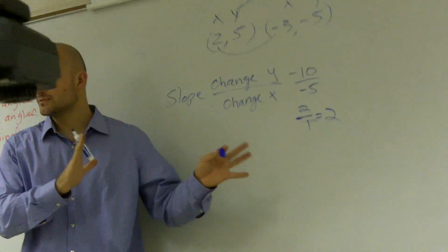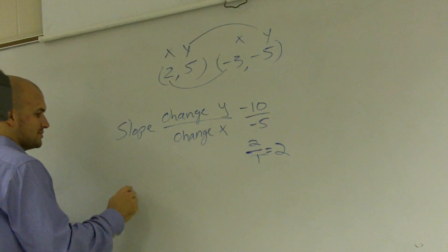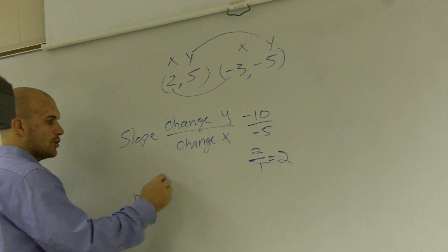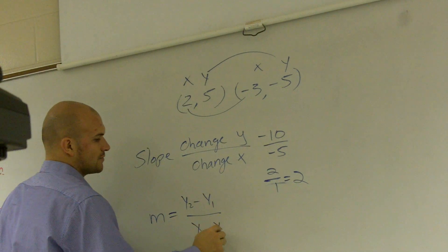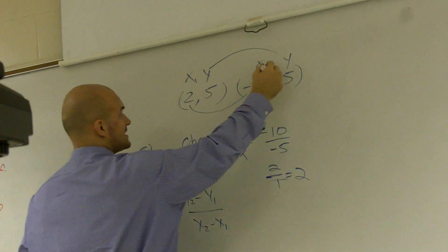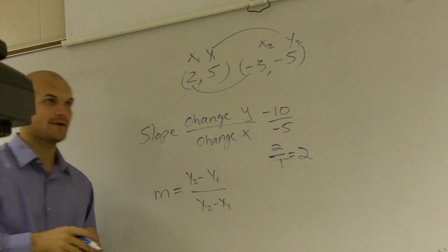Now, if that was kind of difficult for you, memorize this. You can also use this rule. M represents our slope, y2 minus y1 over x2 minus x1. Where this is x1, that's x2, y1, y2.